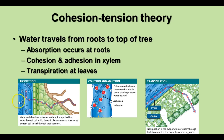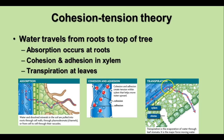Absorption occurs in the roots, where water and dissolved minerals enter through the root hairs and into the xylem. Cohesion and adhesion pull the water molecules up the xylem vessels. At the leaves, transpiration and use by photosynthesis pulls those water molecules up through the xylem all the way into the leaf.